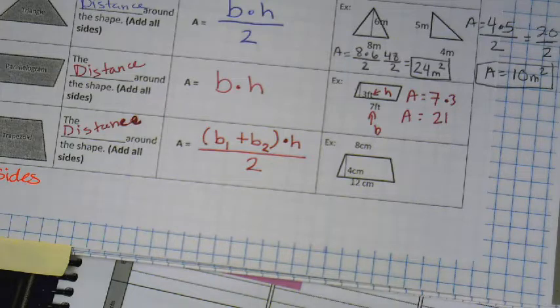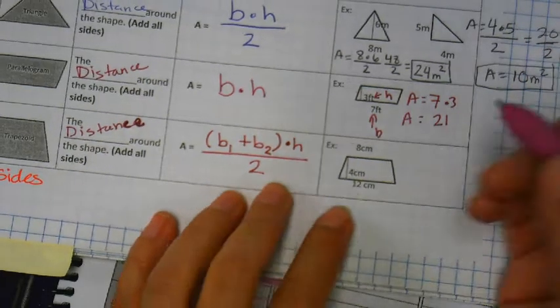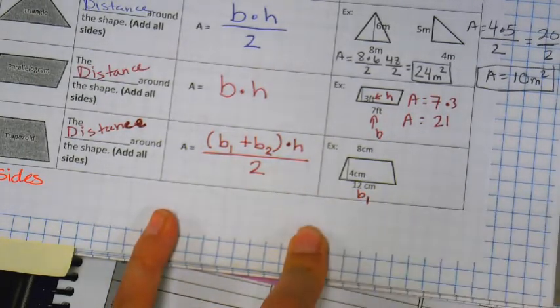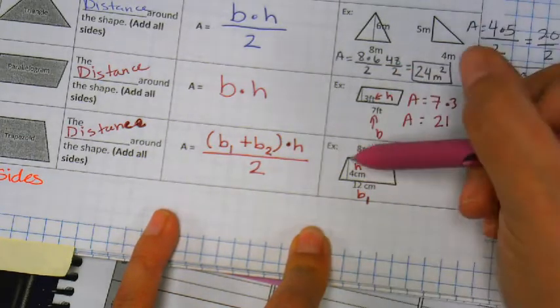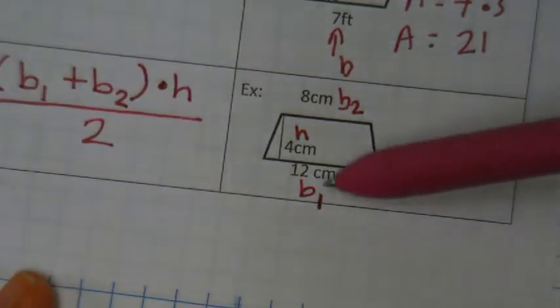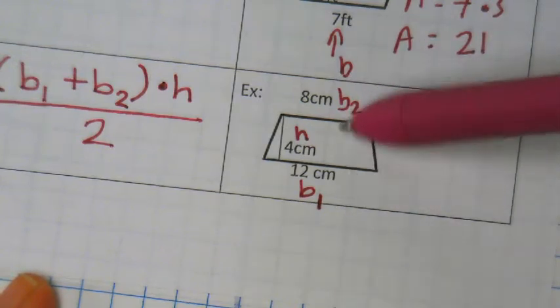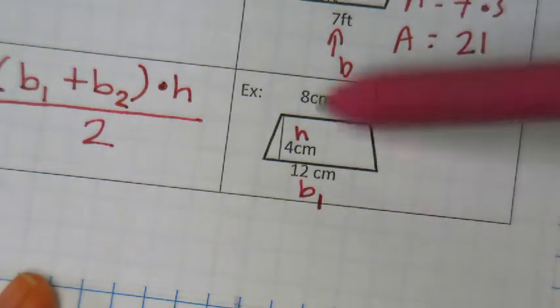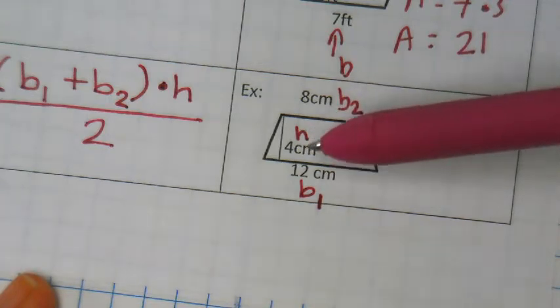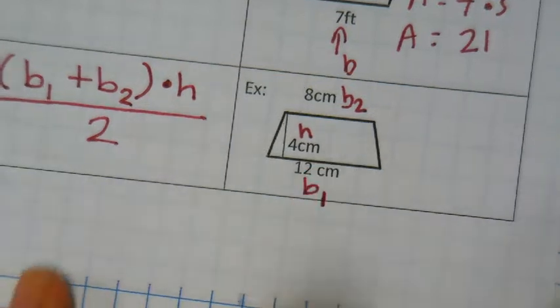We've got to pay attention. In math, you can easily get lost if you go into La La Land, so try to focus. This 12 is base one, and this 8 up here is base two, and the 4 is your height. Remember, heights are inside sometimes. The 12 is base one, the 8 is base two — both can be bases, but they're not the same length. Honestly, you can switch these around. What 100% matters is what you call the height — the vertical one has to be your height.